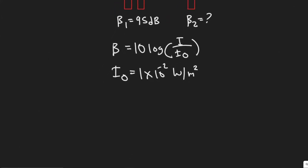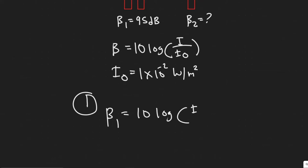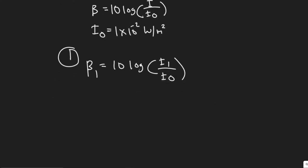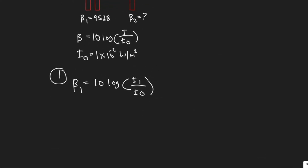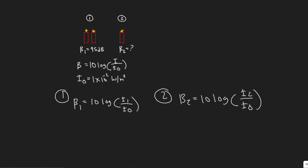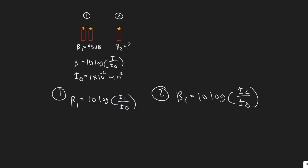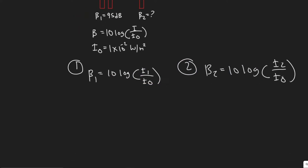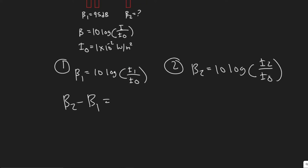For scenario one, we have beta one equals 10 times the log of I₁ over I₀. For scenario two, we have beta two equals 10 times the log of I₂ over I₀. Now that we have both equations written in terms of intensity, what we're going to do is write one equation combining both values — specifically, compute beta two minus beta one — to eliminate some things and make it easier to solve.